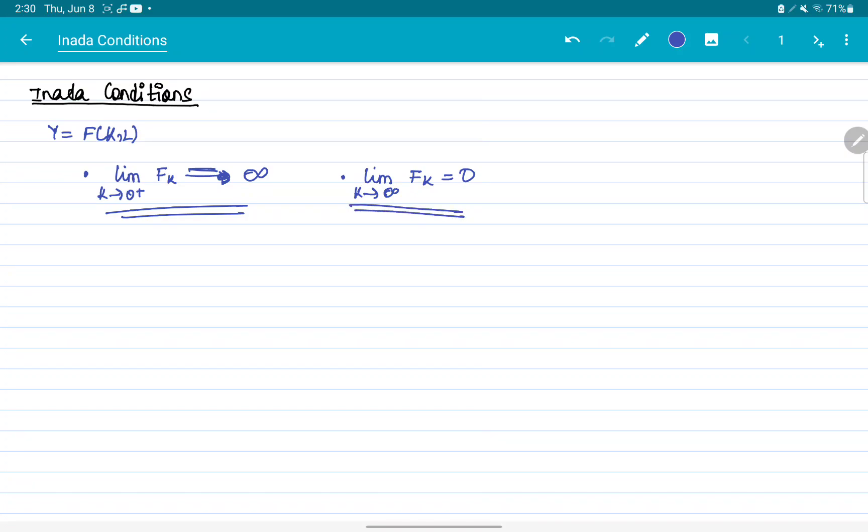And this means that as you add more and more capital, it goes to 0. So understand, we already had fkk negative. So this is already adding a very concave dimension. Mind you, f is not necessarily concave.